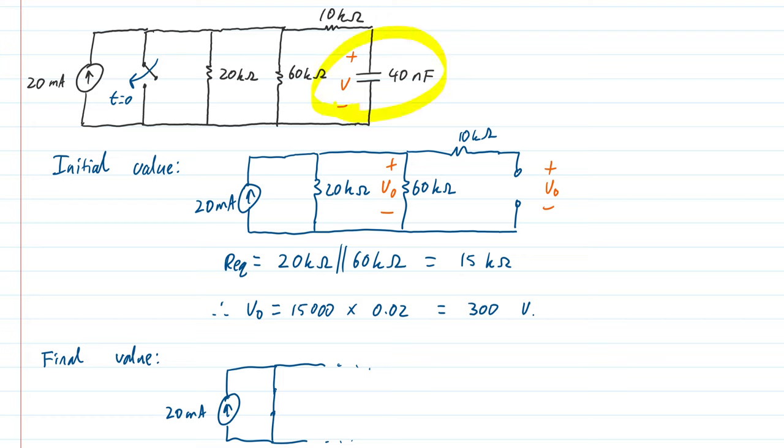The capacitor will discharge its energy. It has a pathway to discharge through the rest of the circuit, so it will eventually settle down to being fully discharged. Looking at the circuit and thinking about it, we can see that the final voltage is 0.